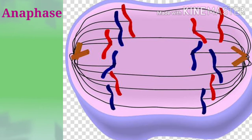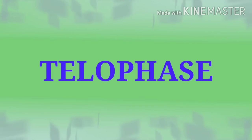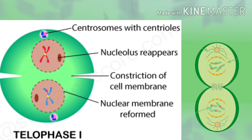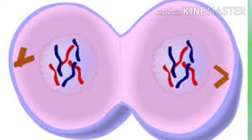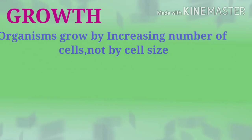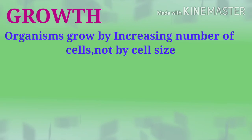In anaphase, centromeres contract, pulling chromatids towards the poles. In telophase, chromatids elongate and become invisible, and the nuclear membrane reforms around the daughter nuclei. The cell membrane pinches in to form daughter cells, or new cell wall material is laid down across the spindle equator, and the nucleus divides into two as division of the cytoplasm begins.